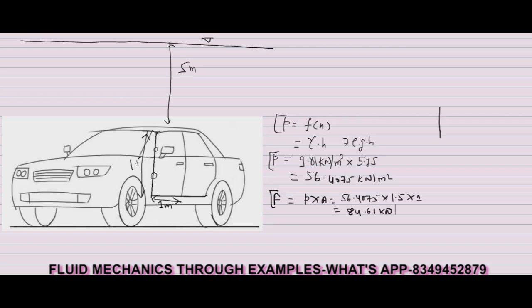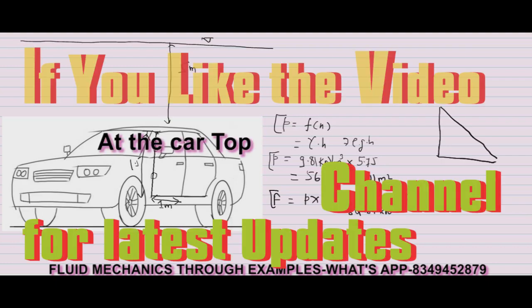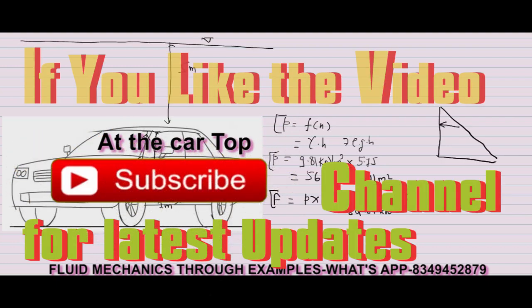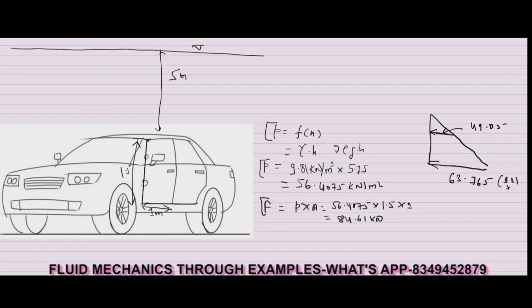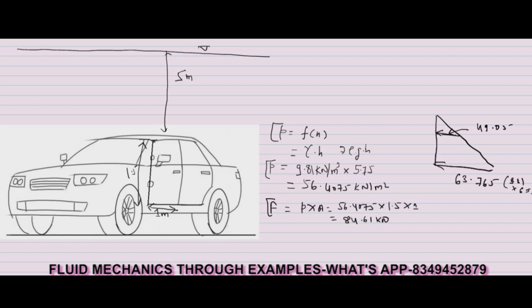Same calculation you can do by plotting the pressure distribution diagram. At this point, pressure developed would be gamma into H, that is 9.81 into 5 meters, which comes to 49.05. At 6.5 meters below, the pressure is 63.765, calculated as 9.81 multiplied by 6.5.